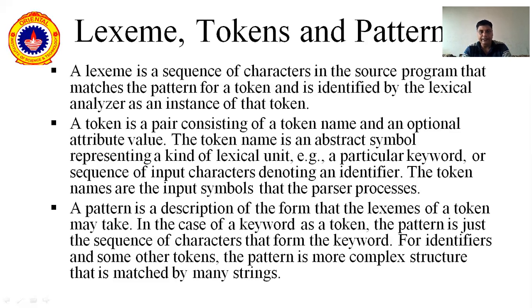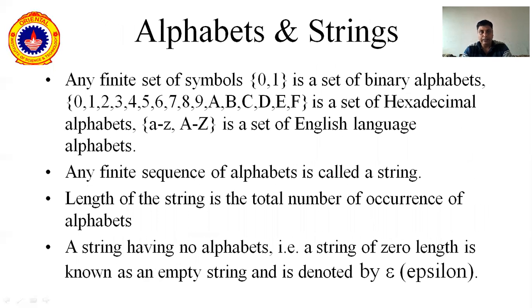Now we are talking about patterns. A pattern is a description of a form that the Lexeme of a token may take, or which kind of pattern we are using to form the tokens. In the case of a keyword as a token, the pattern is just a sequence of characters that will form the keyword. If you are talking about a sequence of numbers or a sequence of symbols, those are different kinds of things. If you are talking about a sequence of characters, then it will form a keyword. So there should be some pattern to write the token and the Lexeme. These are some important terminologies that we need to use in the compiler.